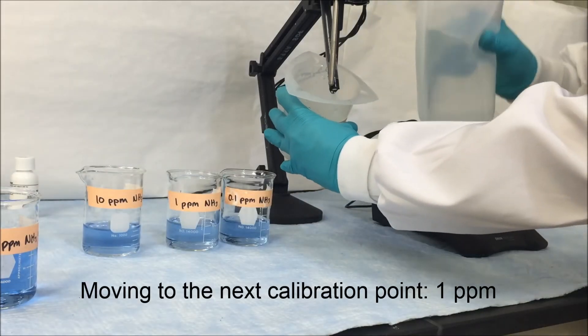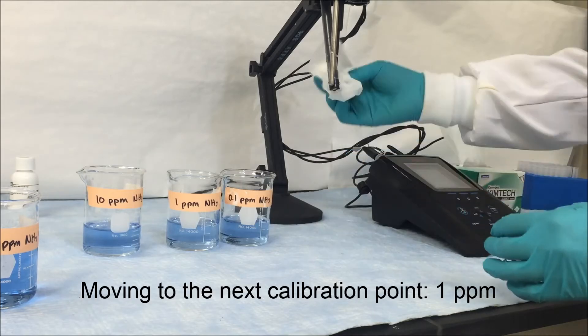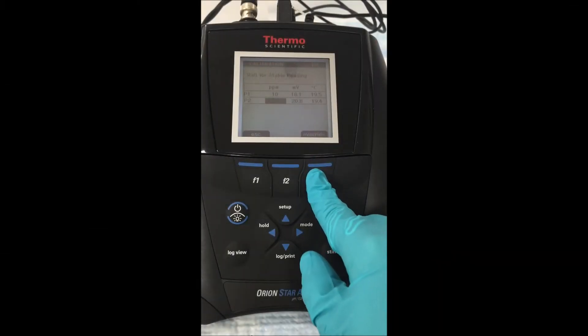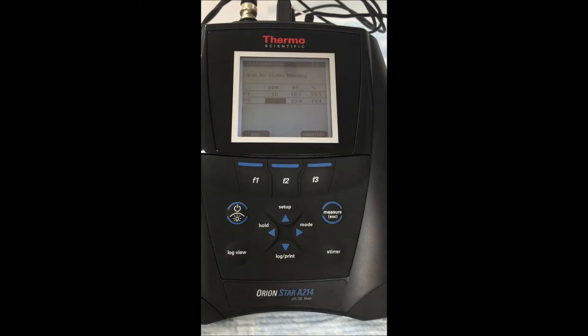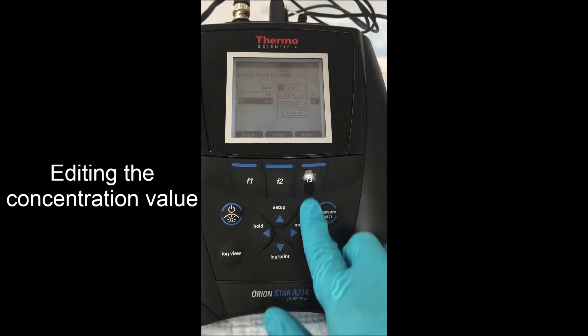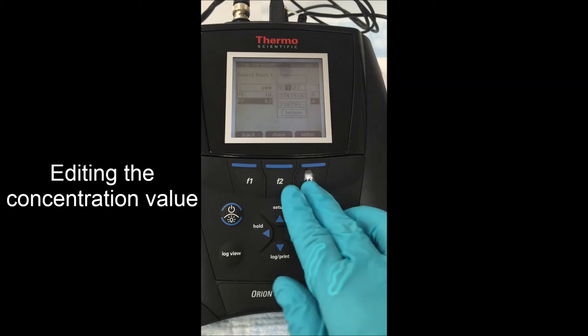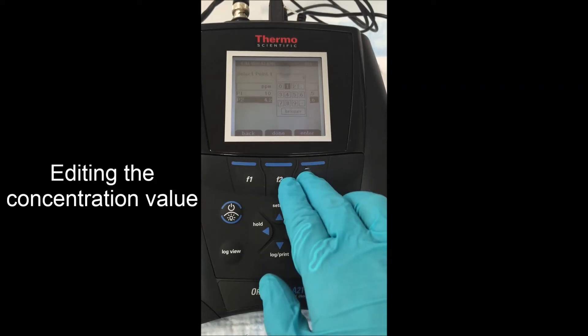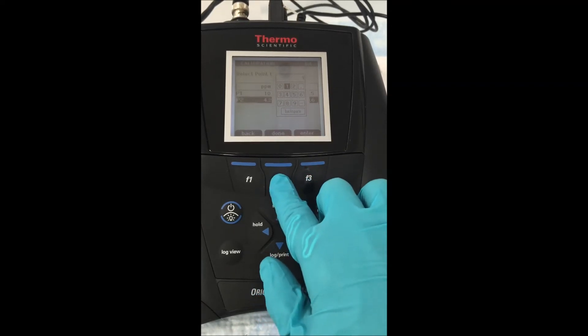We're going to then take the electrode out of the 10, rinse it thoroughly and put it into our 1 mid-level part per million solution. Hitting start again on the meter, we're going to wait until the meter register is ready. Once the meter register is ready, we're going to edit the concentration value to 1 part per million. Hitting accept and starting on to the next point.